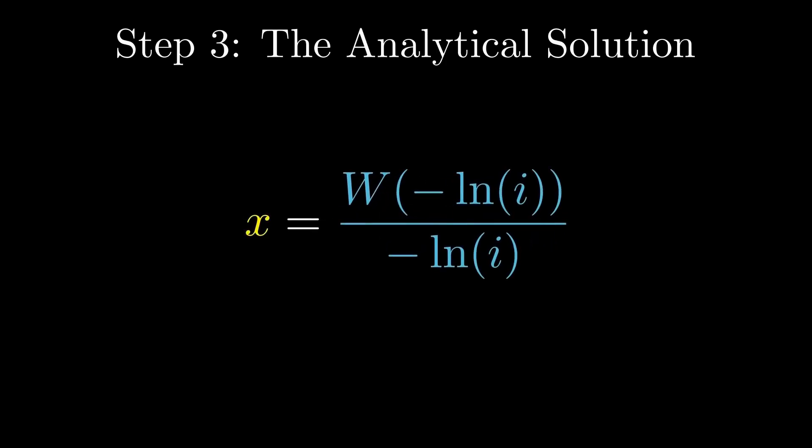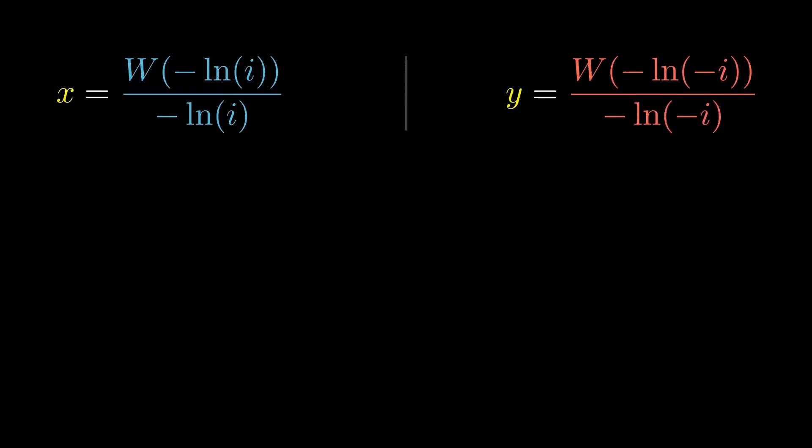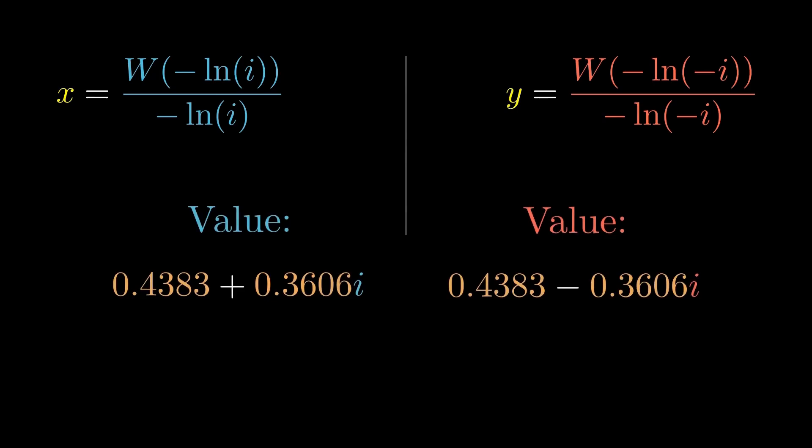We now repeat the exact same process for the base minus i. This produces a second expression with the same structure, but a different angle inside the logarithm. When we evaluate both expressions numerically, we obtain two complex numbers.